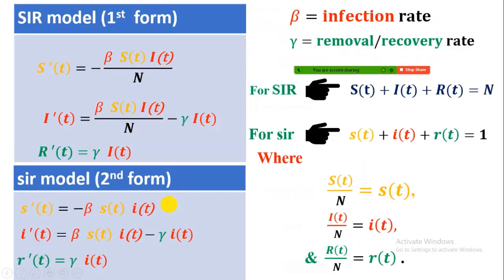Now let me show you the model, or the system of three first order ODEs. We can write this model in two forms: the first uses capital S, I, R, and the second uses small s, i, r.